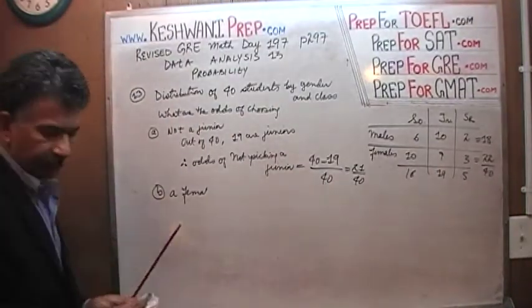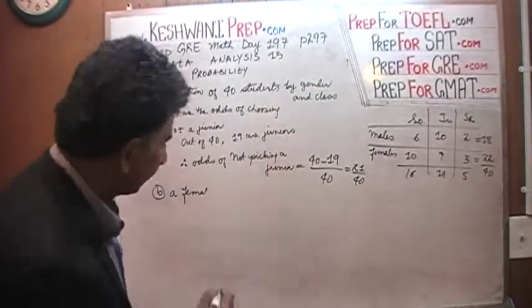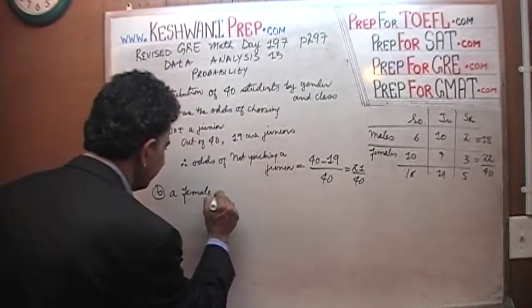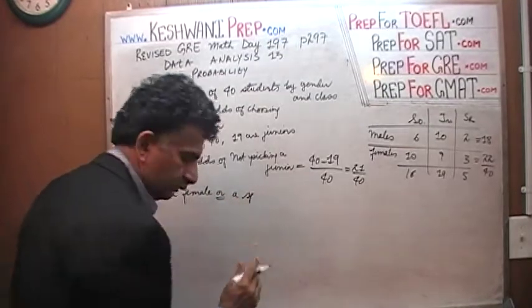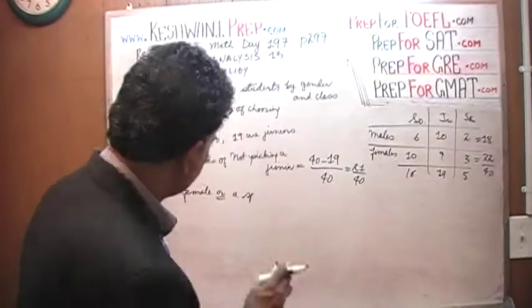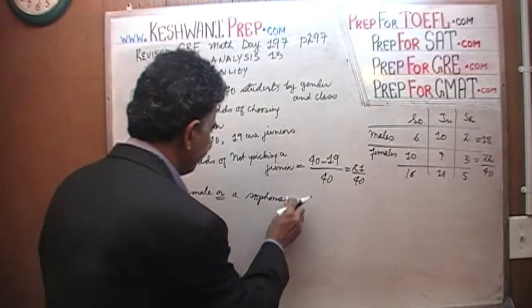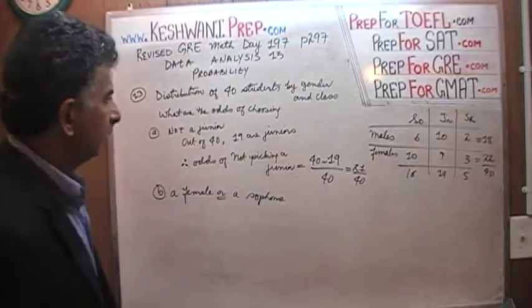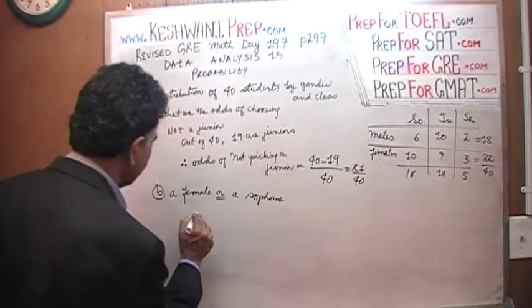Let's do the second one. The second one says the odds of picking a female or a sophomore. A female or a sophomore. How do you spell sophomore? Well, how many females are there? Females are, if we add them up here, there are 22 females.